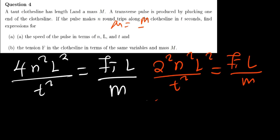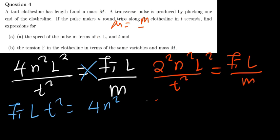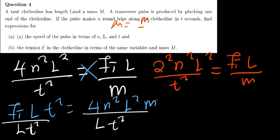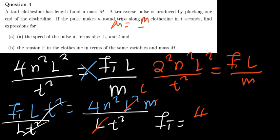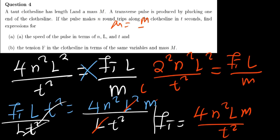Our goal is to make the tension force the subject of the formula. Cross-multiplying gives F times L times T² equals 4N²L²M. Dividing both sides by L times T², one L cancels, giving the tension force F equals 4N²LM divided by T². This is the formula for the tension force in terms of the given variables.